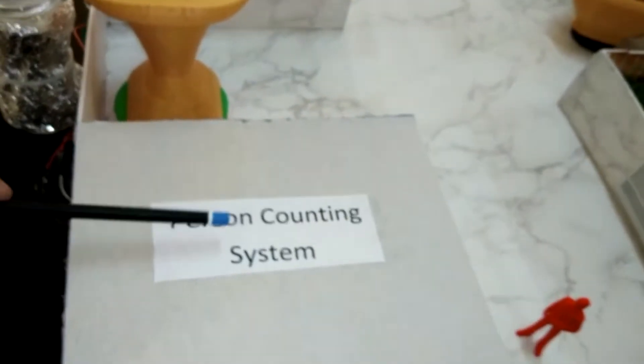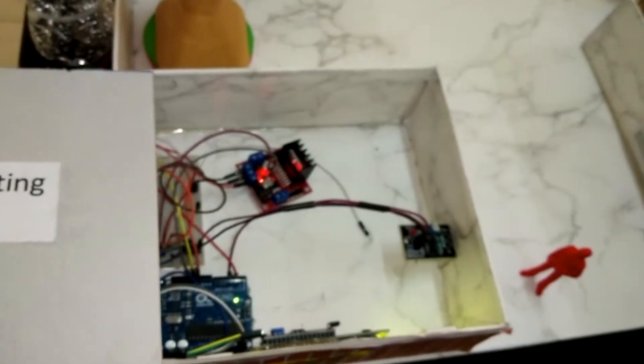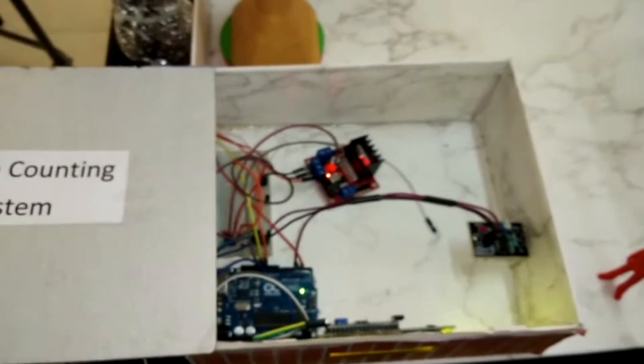This is the circuitry area. It includes all the things such as the Arduino and the LCD.